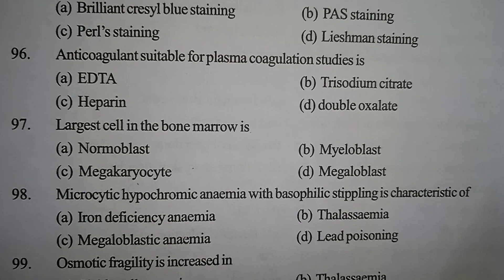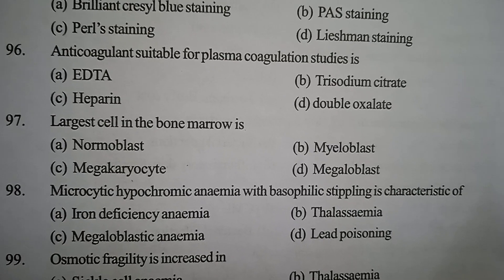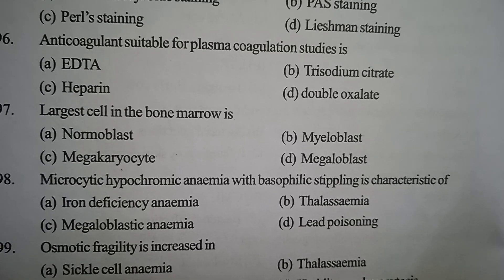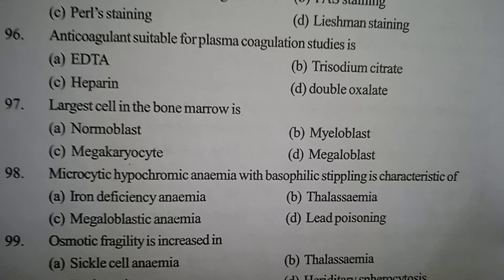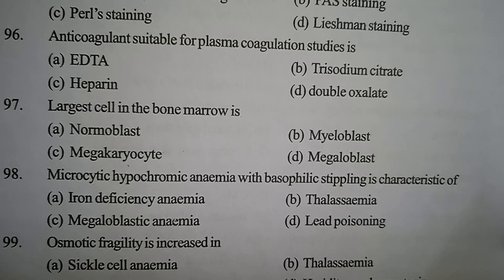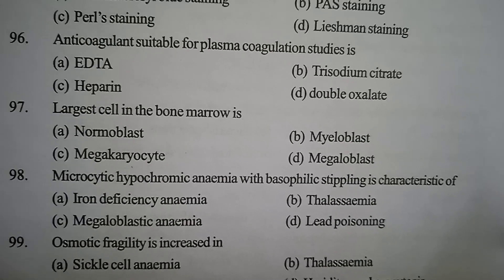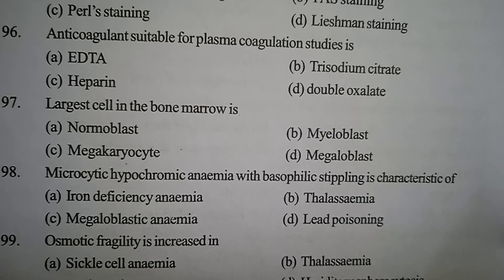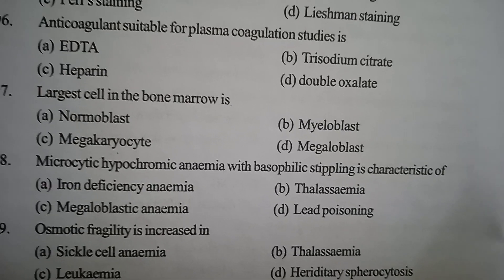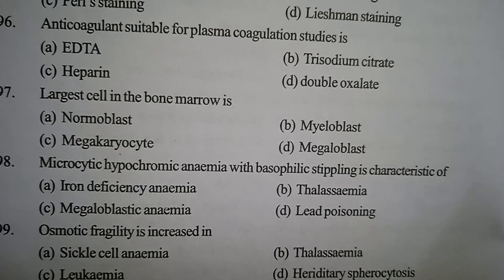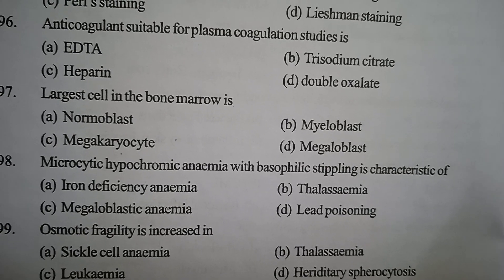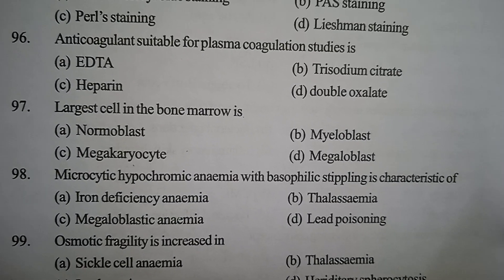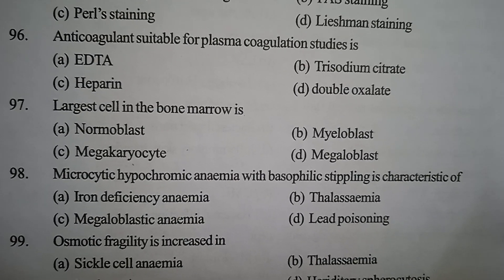Next one: microcytic hypochromic anemia with basophilic stippling is characteristic of — Option A: iron deficiency anemia. Option B: thalassemia. Option C: megaloblastic anemia. Option D: lead poisoning. Correct answer: Option D, lead poisoning.